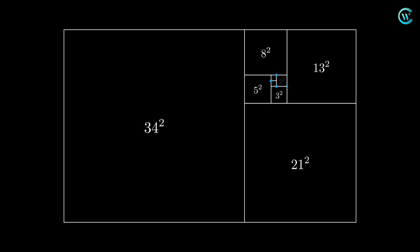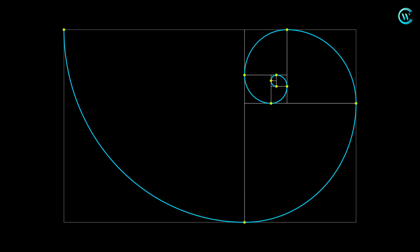Then points are marked on the opposite corners of each of the squares. And now, the Fibonacci spiral is drawn through these points.